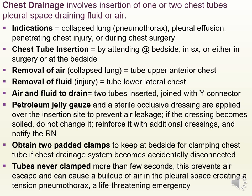Chest drainage helps remove air or fluid from the pleural space and involves insertion of one or two chest tubes. Indications include collapsed lung, pleural effusion, penetrating chest injuries, or chest surgery. The tubes are inserted by the attending physician at the bedside or in surgery. To remove air from a collapsed lung, the tube is placed in the upper anterior chest wall. To remove fluid from an injury, the tube is placed in the lower lateral chest wall. If both air and fluid need to be removed, two tubes are inserted and joined with a Y connector.